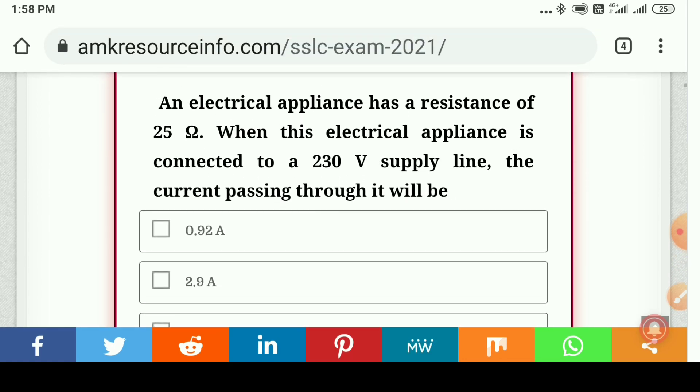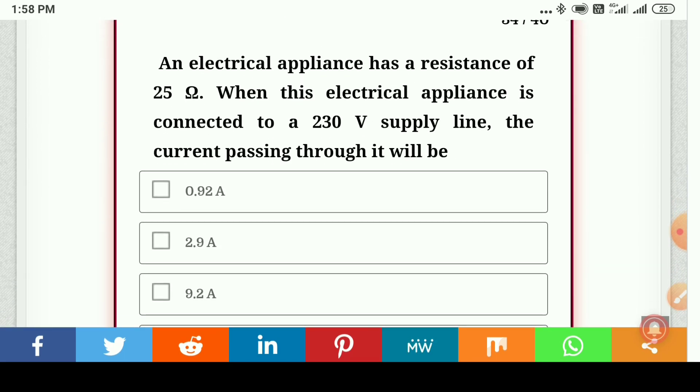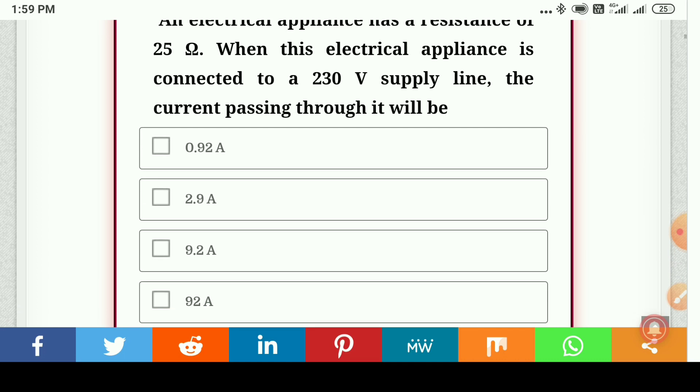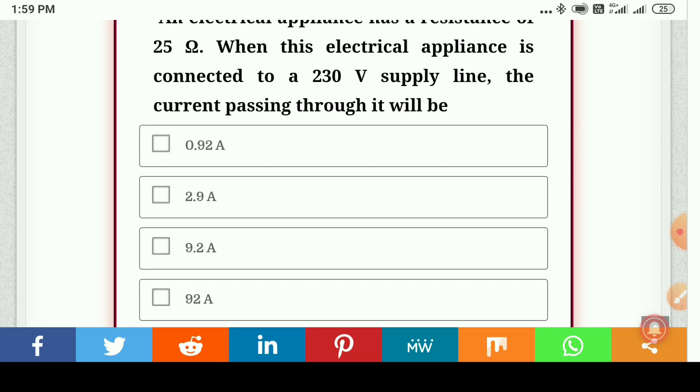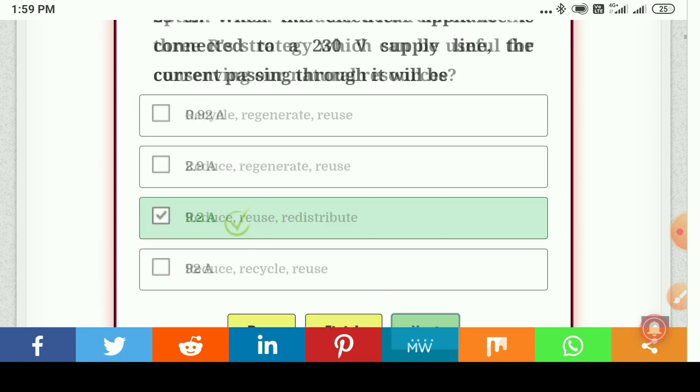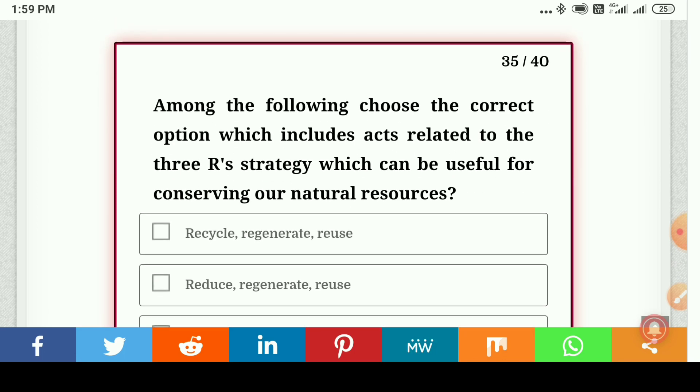An electrical appliance has a resistance of 25 ohm. When the electrical appliance is connected to 230 volt supply line, the current passing through it will be... so the answer is 9.2 ampere.